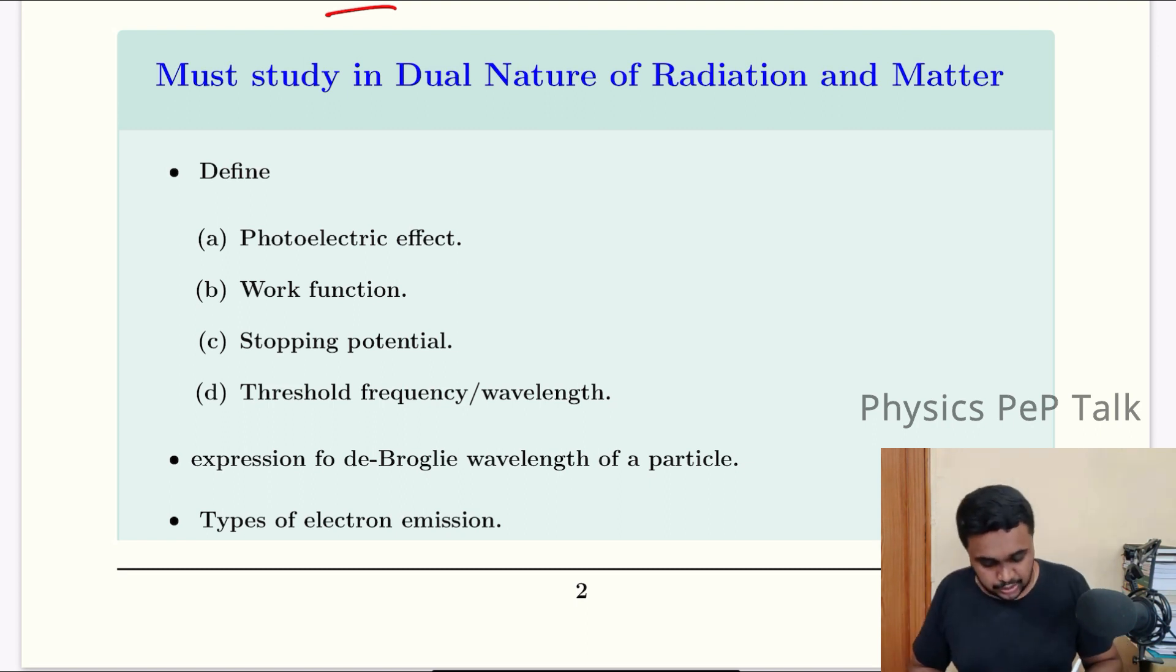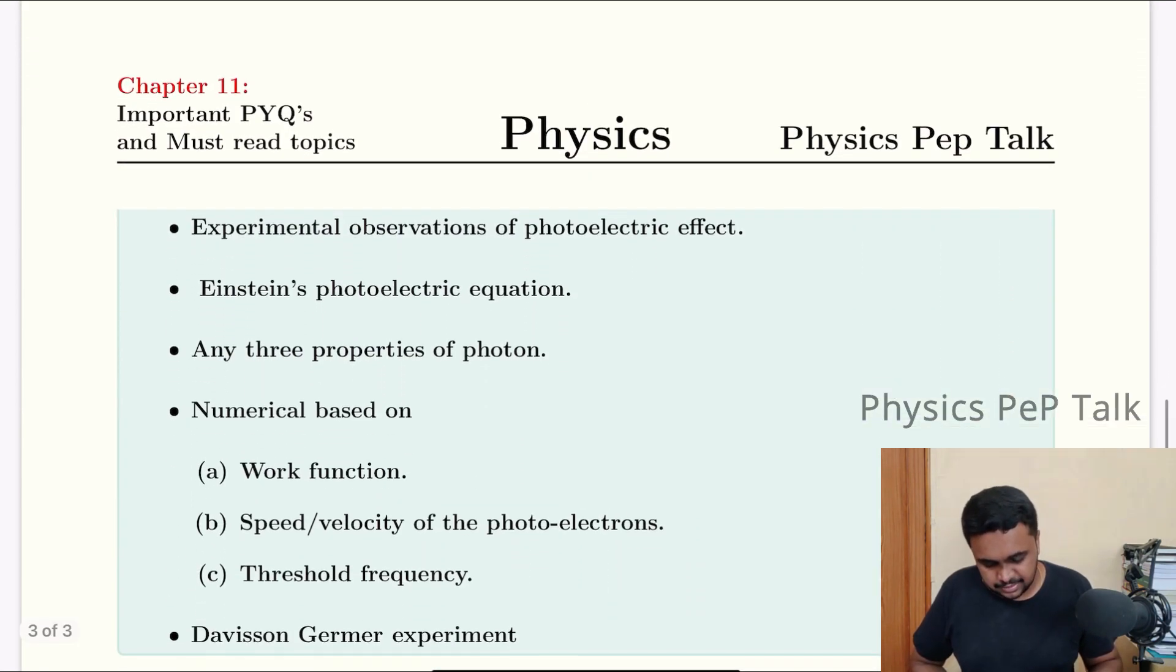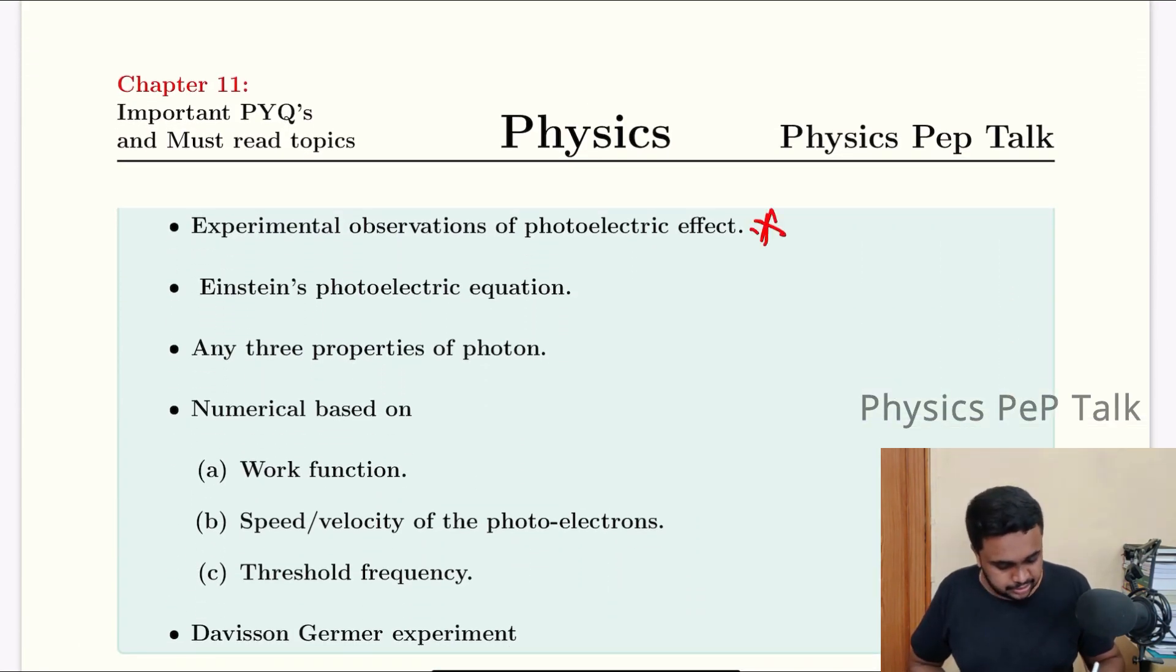Learn these definitions. These are the probable questions they can ask from this year onwards as well. Define photoelectric effect, define work function, what is stopping potential, threshold frequency and threshold wavelength. Expression for de Broglie wavelength of particle in terms of kinetic energy and accelerating potential.